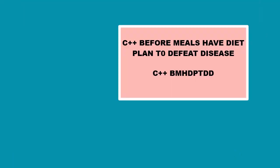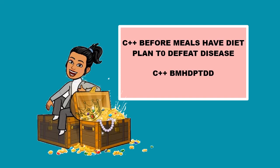Here's the code: 'C++ before meals have diet plan to defeat disease.' C represents Conceptual Analysis and Planning. The first P represents Project Design, the second P represents Pre-Production. B for Budgeting, M for Multimedia Production Team, H for Hardware or Software Selection, D for Defining the Content, P for Production, T for Testing, D for Documentation, and the last D is for Delivering the Multimedia Product.